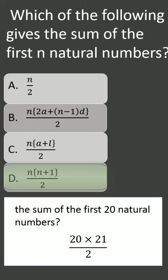n is 20. n plus 1 is 21, divided by 2. 20 times 21 is 210.